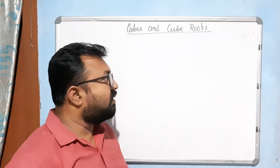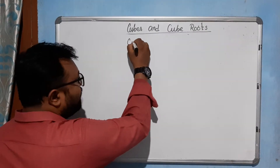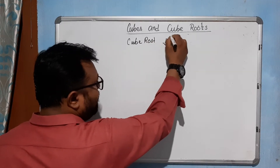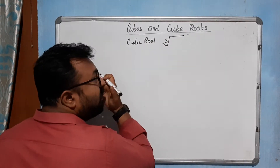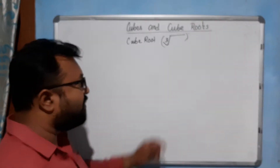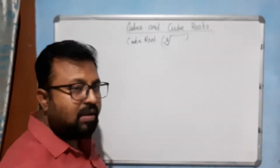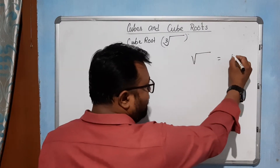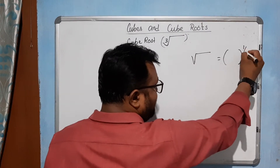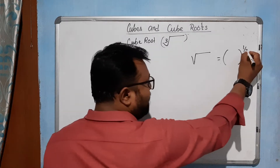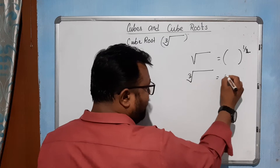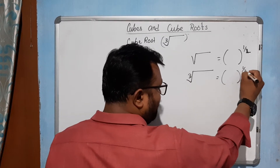Let's start with the next part: cube root. The symbol of the cube root — you know the symbol of a square root — we can write it like this, and for cube root we can write it as one by three (the exponent 1/3).